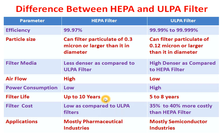Now for filter cost: HEPA filters are cheaper compared to ULPA filters. The ULPA filter costs 35 to 40 percent more than the HEPA filter, meaning HEPA filters are more economical than ULPA filters.